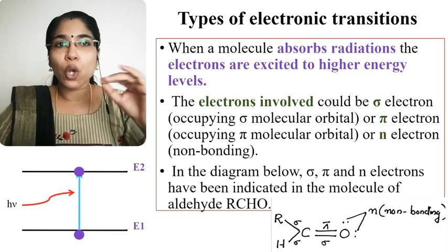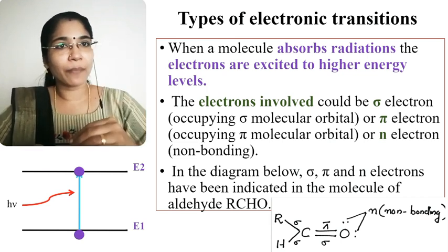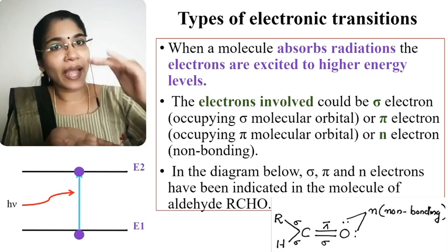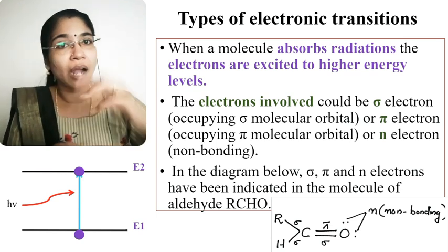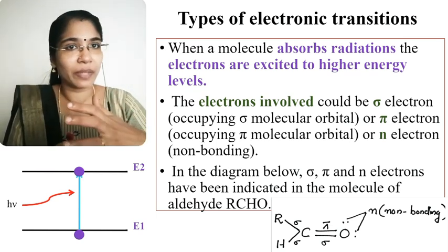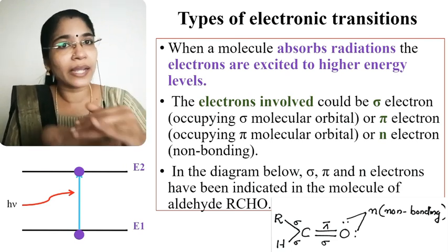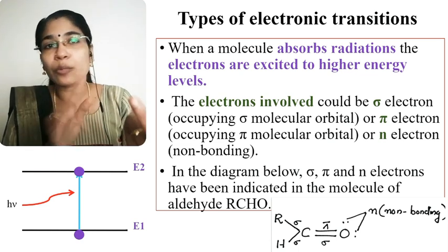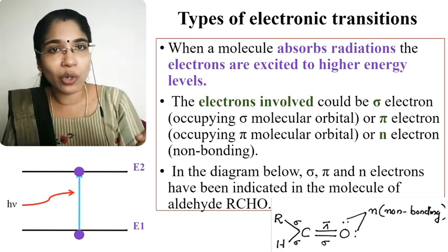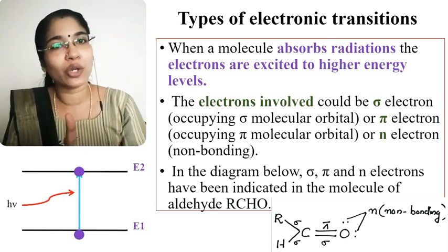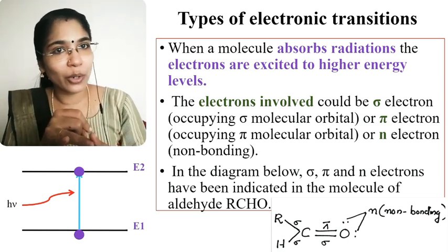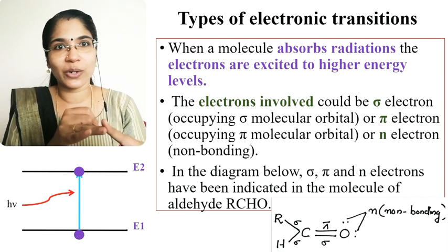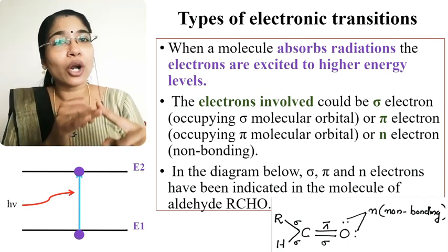When a molecule absorbs radiation, the electrons are excited from the lower energy level to higher energy levels. The electrons involved could be sigma electrons — those occupying sigma molecular orbitals — pi molecular orbitals, or non-bonding electrons.